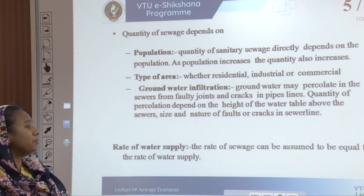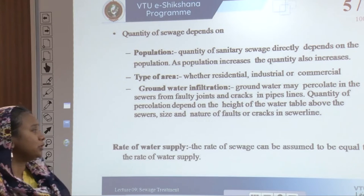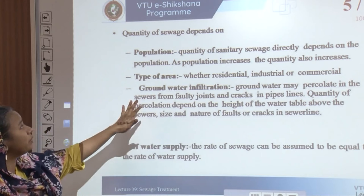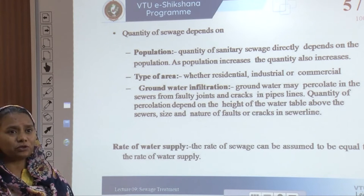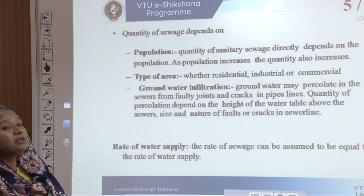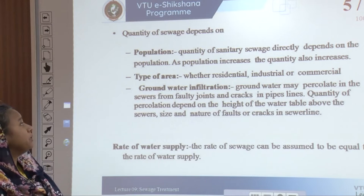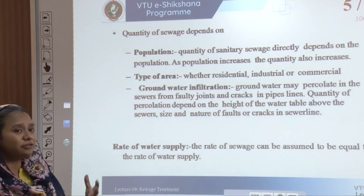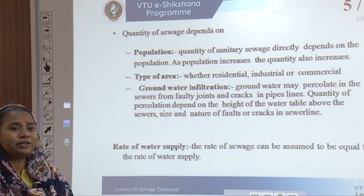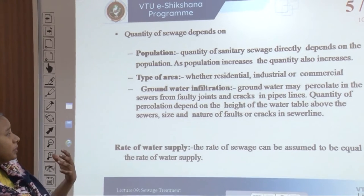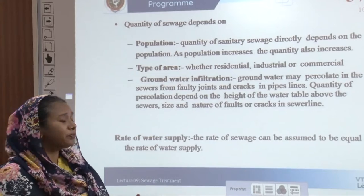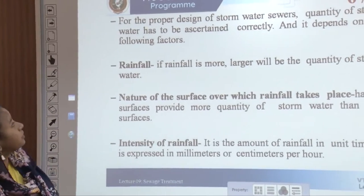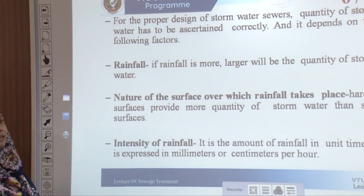The rate of water supply is assumed to be equal to the rate of sewage. You have to be very sure in terms of sewage quantification because it depends on the number of people, the type of usage, infiltration, and how the overall groundwater plan has been designed.